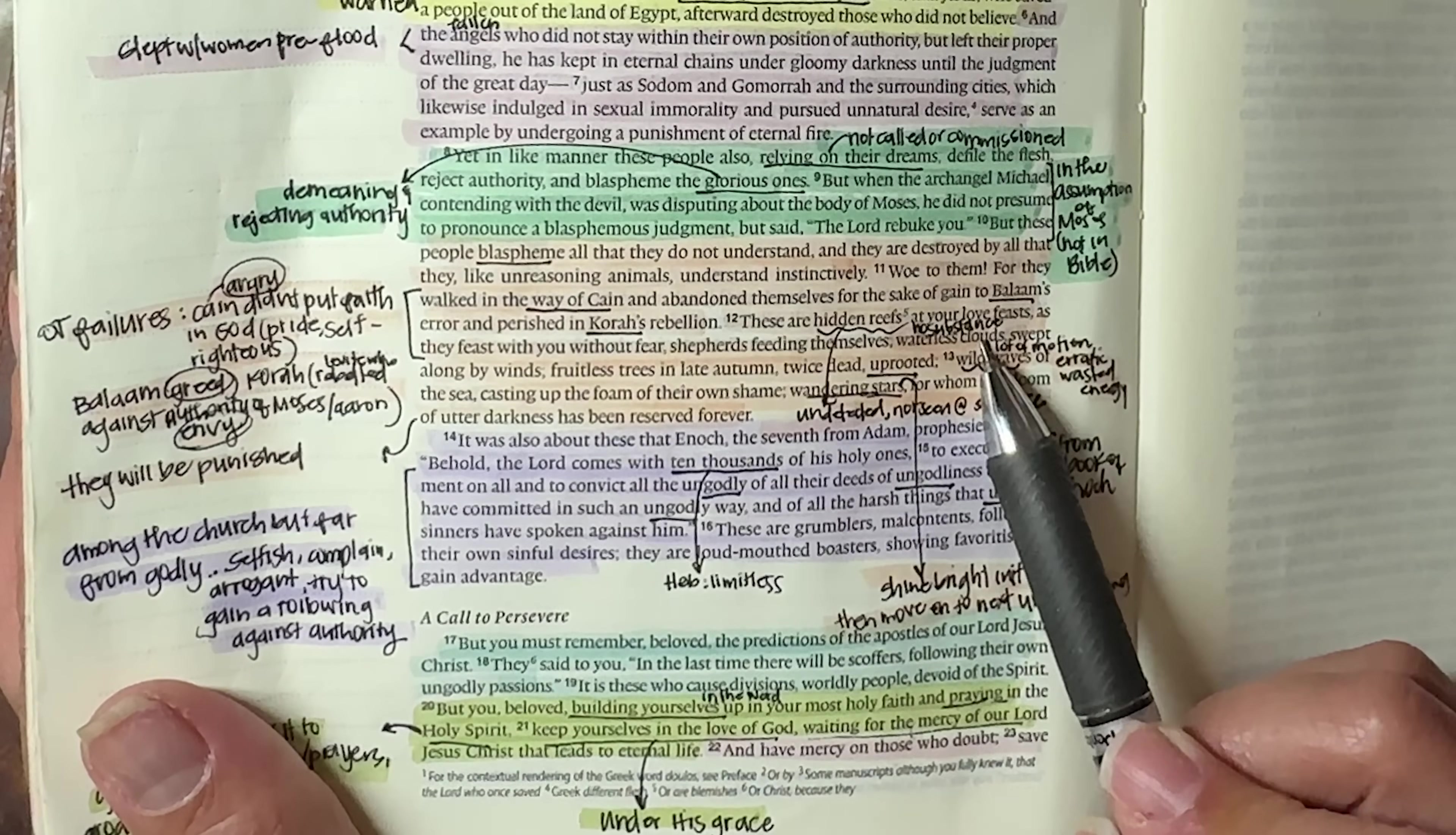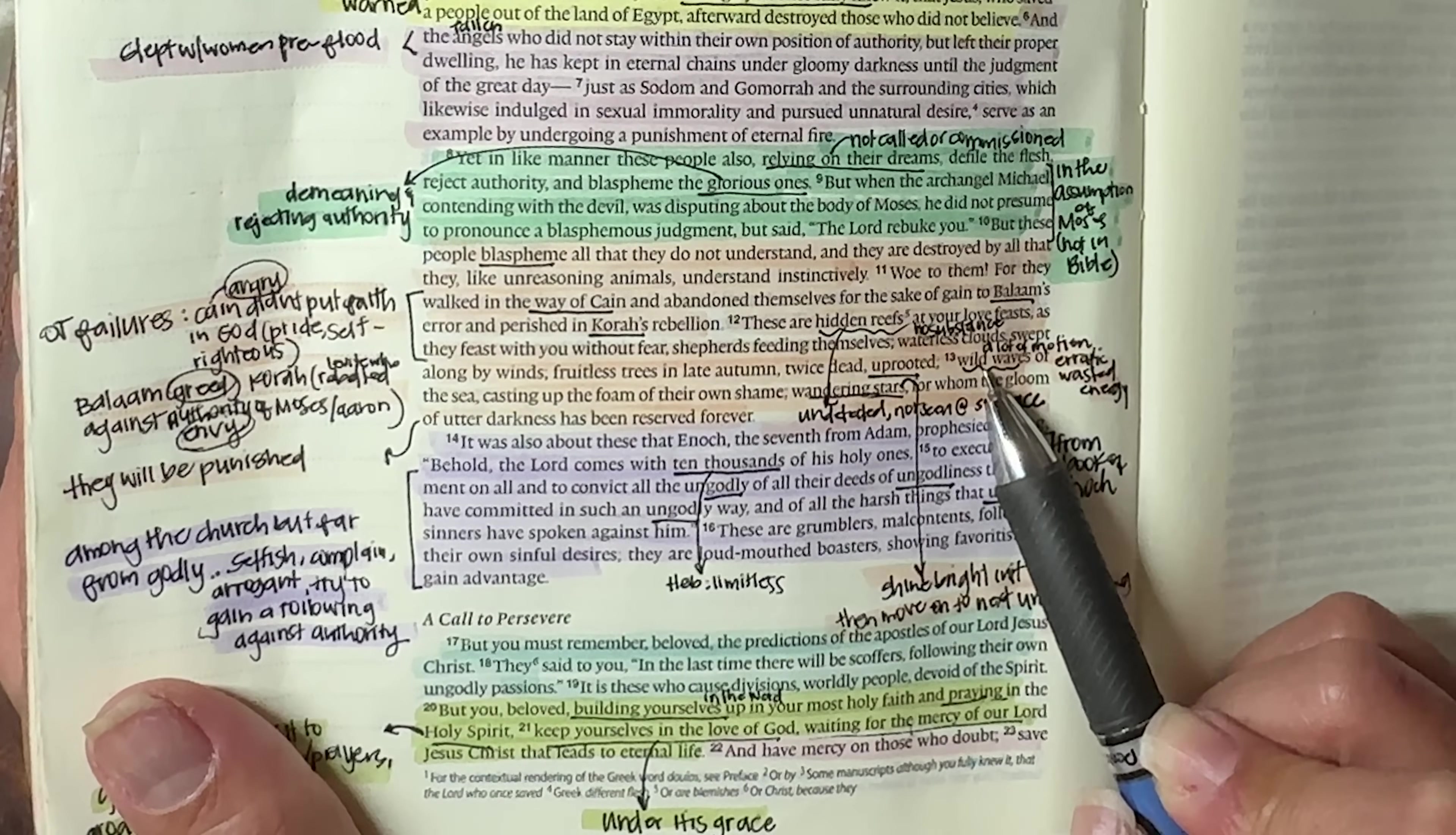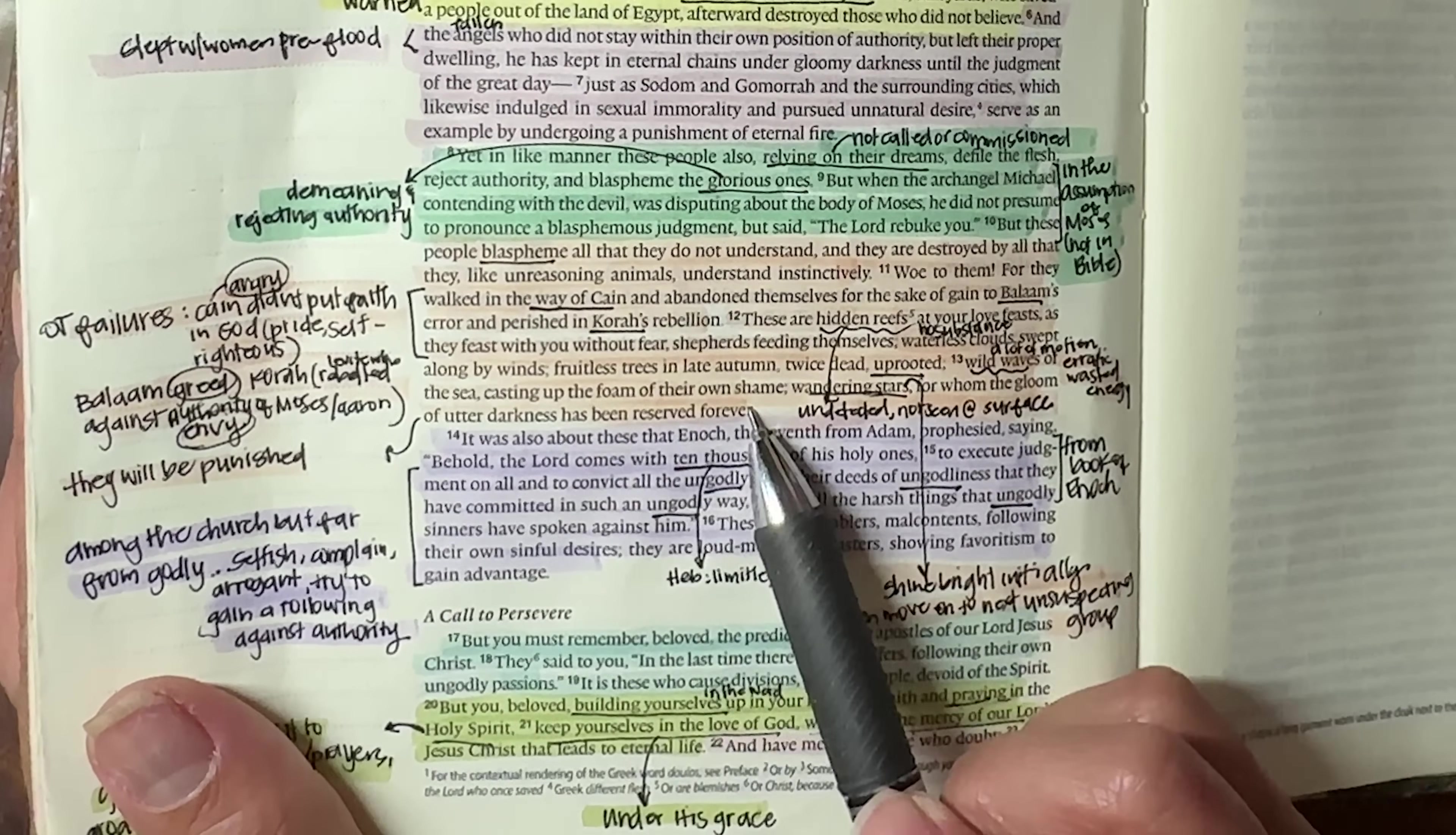Waterless clouds. So again, no substance. Swept along by winds, fruitless trees in late autumn. So they really will produce no good fruit. Twice dead, uprooted. Wild waves of the sea. So they are causing a lot of motion. They're erratic, wasting a whole lot of energy, but really not getting anything done. Casting up the foam of their own shame. So eventually they are going to fall.